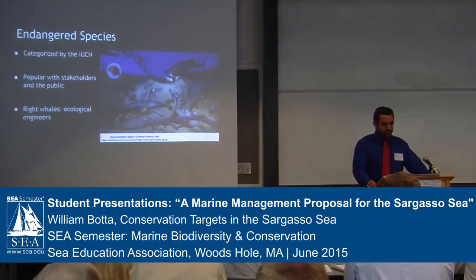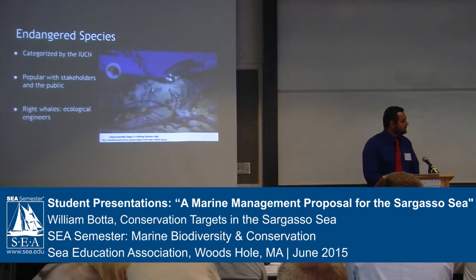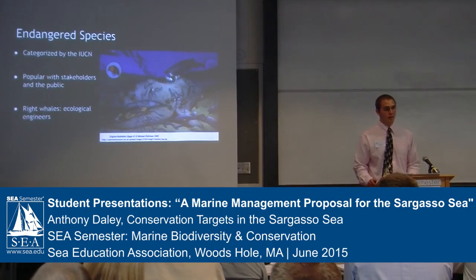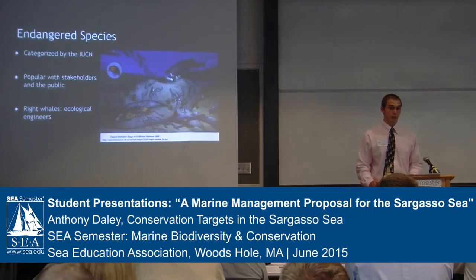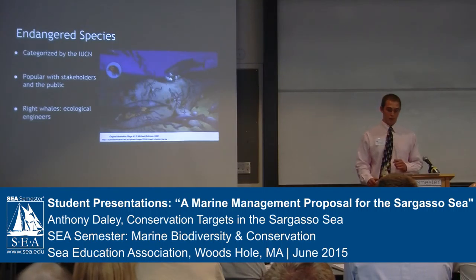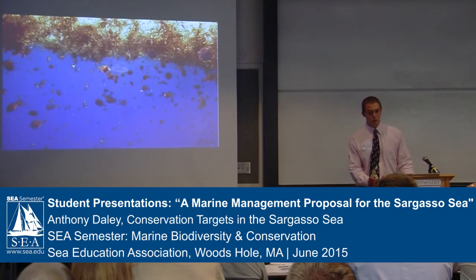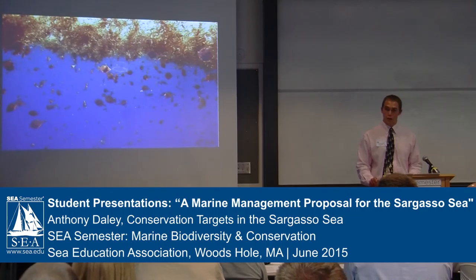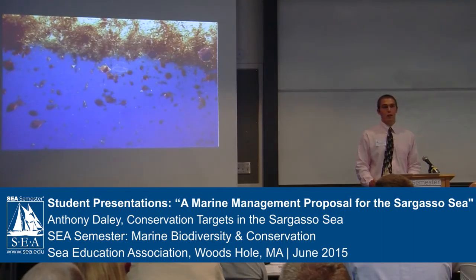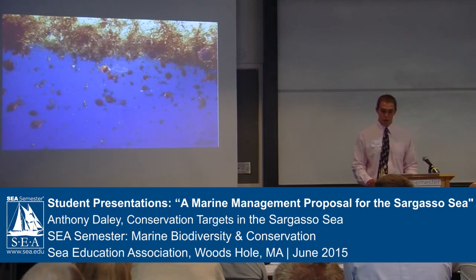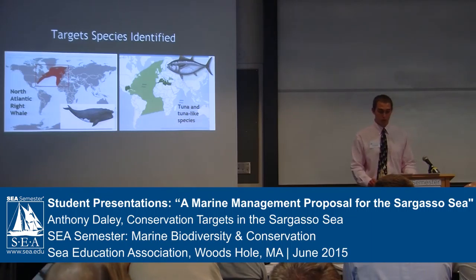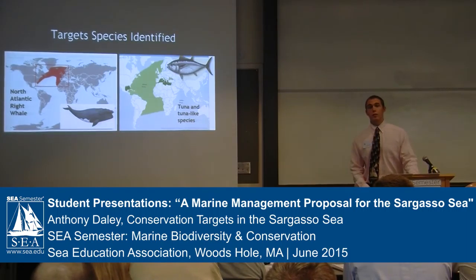So far Helene and Will have mentioned conservation targets like sargassum seaweed, seamounts, and commercially important and endangered species like tuna. For this proposal, I want to make it clear that we are basing our management scheme on four main conservation targets. Sargassum has been chosen because it is a critical habitat for a wide array of organisms. Seamounts have been chosen for the same reason — they support a unique diversity not otherwise found on the deep ocean floor. The North Atlantic right whale and tuna and tuna-like species have been chosen as our target species. Tuna and tuna-like species were chosen primarily because of their great economic importance.